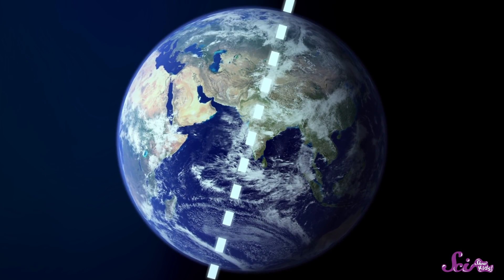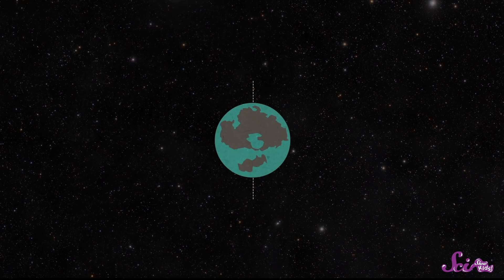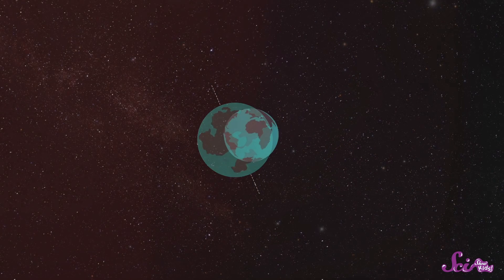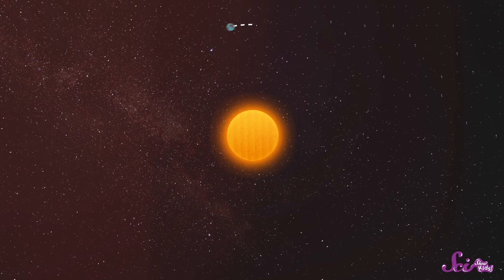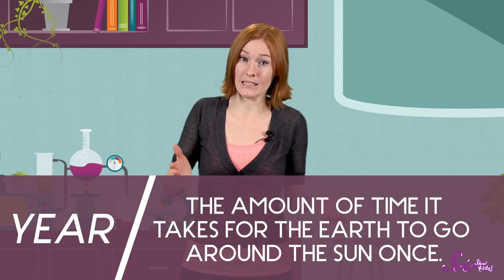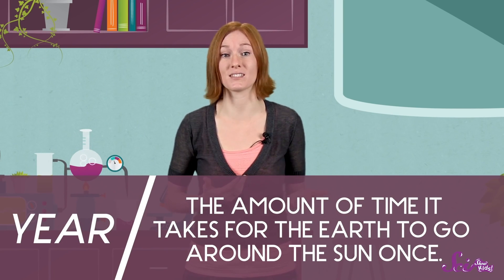A really, really long time ago — billions of years ago — scientists think something big hit the Earth. The impact was so strong that it knocked our planet over a little bit. So now Earth is tilted. Our tilted planet travels around the Sun, completing one full trip all the way around every year — that's what a year is. And depending on where the Earth is in its journey around the Sun, our exposure to sunlight changes, and that means the seasons change.